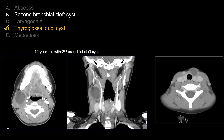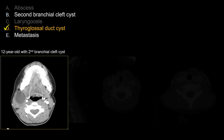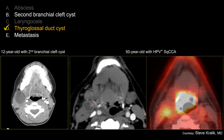Unless infected, a second branchial cleft cyst should also look very benign with a thin wall and homogeneous internal consistency. One thing to be careful about is calling something a second branchial cleft cyst in an adult. In the same classic location, make sure this is not nodal metastasis, which is going to be more common. For example, a 50-year-old with HPV-positive oropharyngeal carcinoma tends to present with cystic nodal metastasis that can have a suspicious internal soft tissue component. In a child in a typical location, yes — second branchial cleft cyst. But in an adult, consider nodal metastasis until proven otherwise.